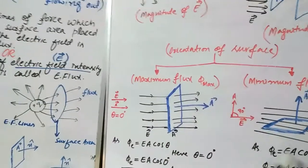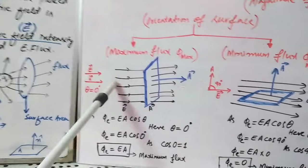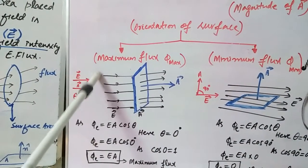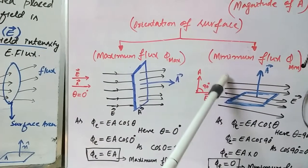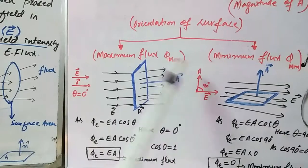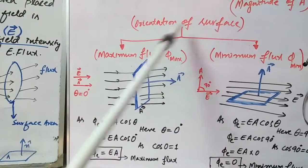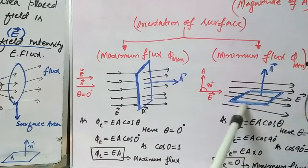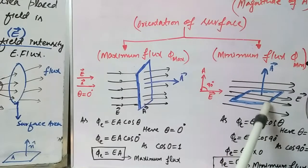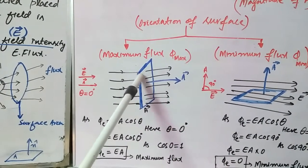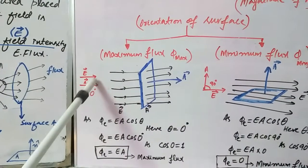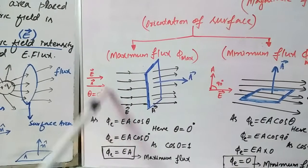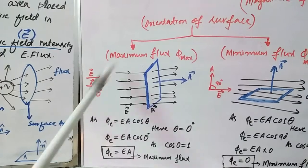Here you can see two different cases. In both cases the electric field direction is the same. The only difference is the orientation of the surface. In the first case, the surface is placed perpendicular to the direction of the electric field lines, so the angle between the electric field and the area vector is zero because both are in the same direction.